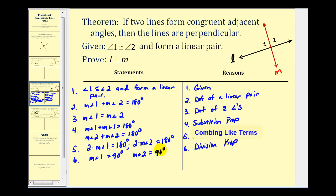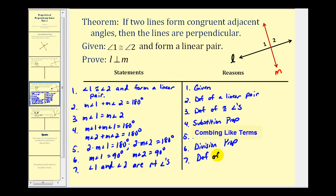And now we're almost there. If these two angles have a measure of ninety degrees, that means angle one and angle two are right angles — by definition of right angles. And now we have it: because if these two lines intersect and form right angles, line L must be perpendicular to line M, by definition of perpendicular lines.